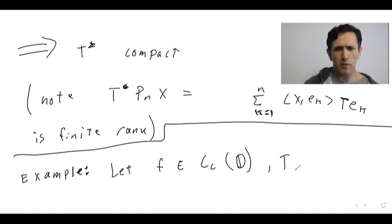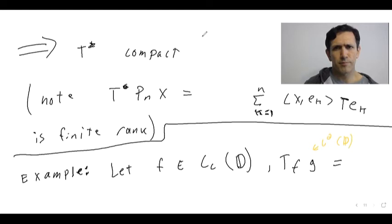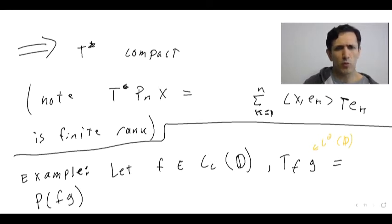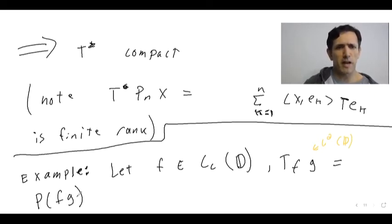Remember what the Toeplitz operator is. For g in L2 of the disk with respect to ordinary area measure, the Toeplitz operator Tf(g) is just your orthogonal projection of f times g. Since f is bounded, this is trivially a bounded operator from L2 to A2, the Bergman space.